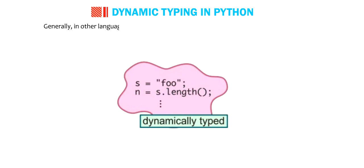Generally, in other languages, before defining a variable, you need to specify its data type.